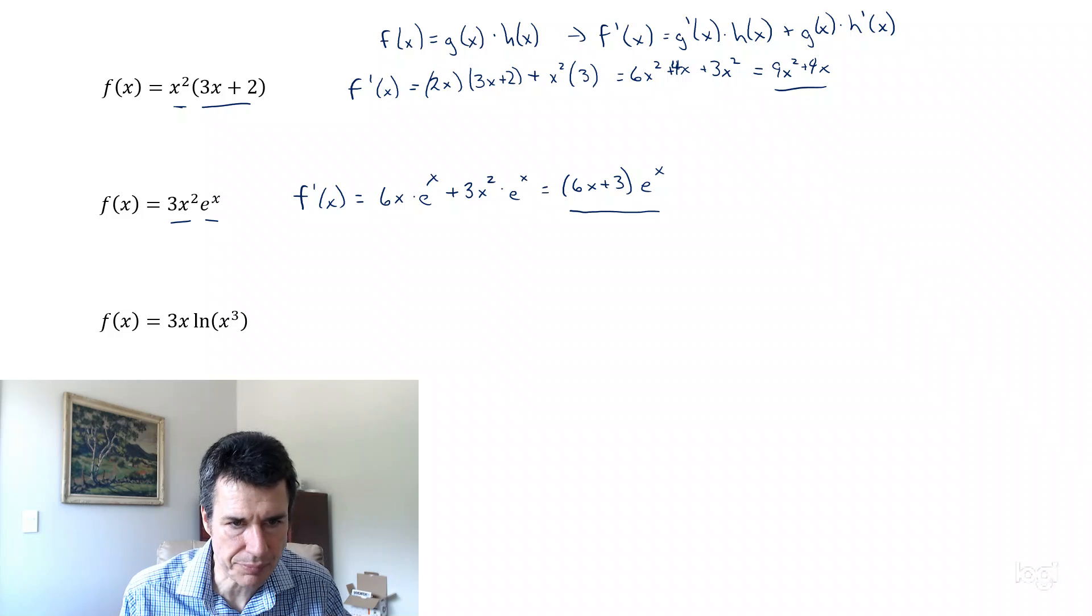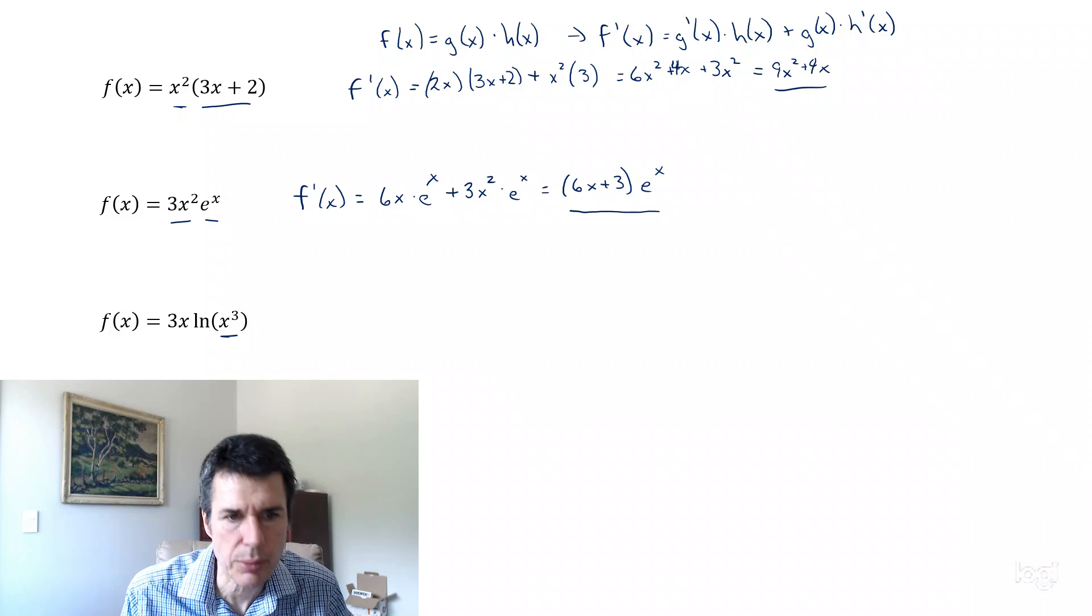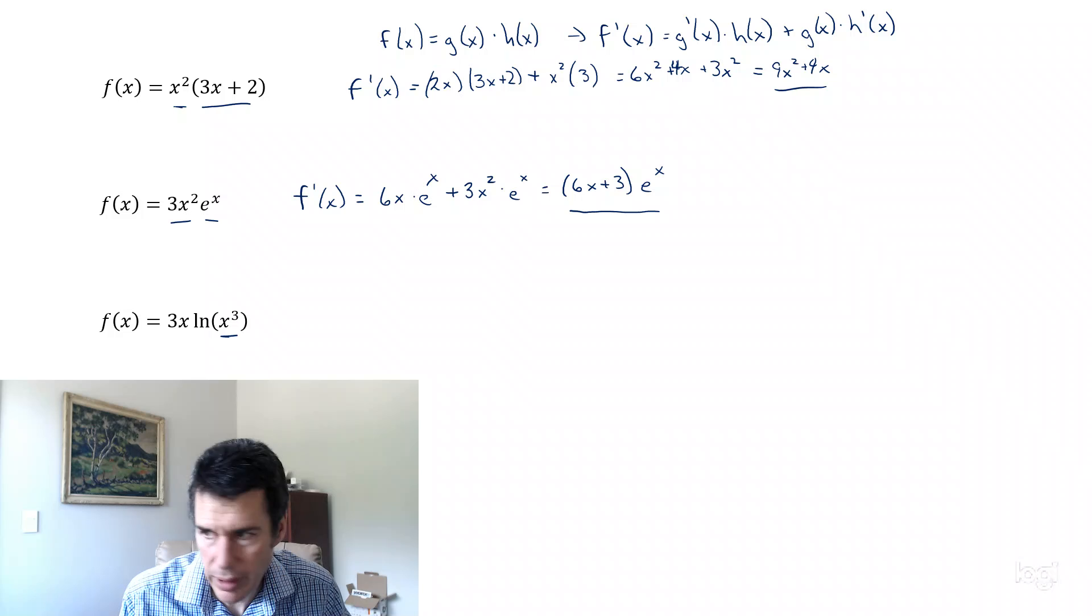This last function, we have a problem, which is that x cubed. So we have to deal with that first. I'm going to rewrite f(x). If we've got the natural log of something to a power, we can bring the power out in front. So that's going to be 3x times 3, so that's 9x times natural log of x.